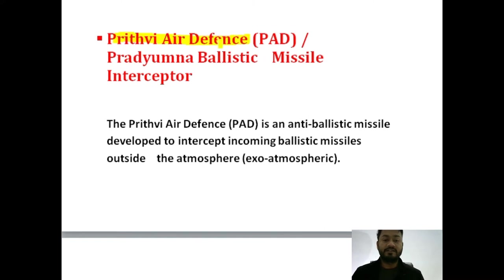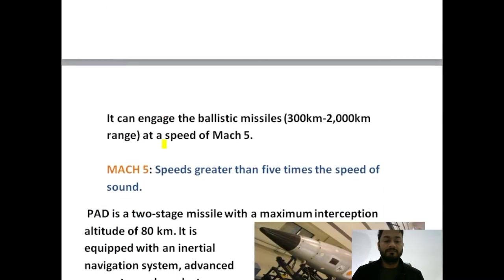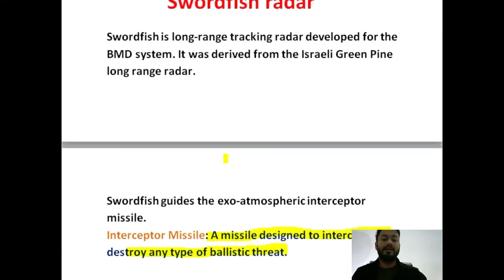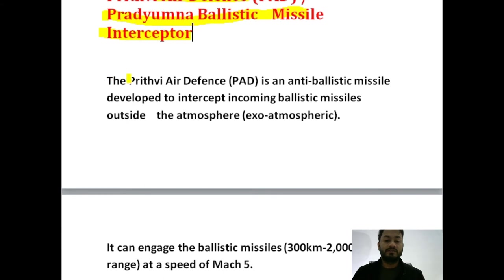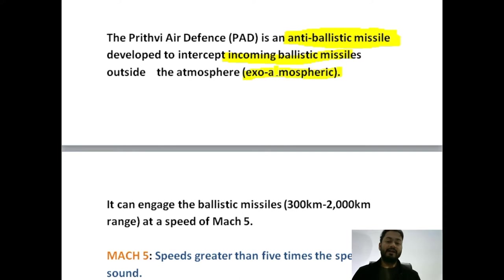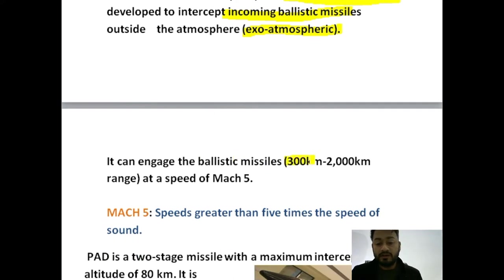Second in the series is Prithvi Air Defense, also known as the Prithvi Ballistic Missile Interceptor. Interceptors are missiles designed to intercept and destroy any ballistic threats — if any missile has targeted India, it is counter-attacked with the interceptor missile. Prithvi Air Defense is an anti-ballistic missile developed to intercept incoming ballistic missiles. It is an exo-atmospheric missile — it can fight after crossing the atmosphere — and it engages ballistic missiles at a range of 300 to 2000 kilometers with a speed of Mach 5.